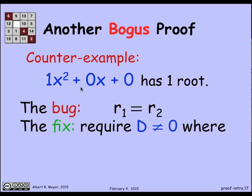The fix to that is to require the quantity by which the two formulas, r1 and r2, differ to be non-zero. And that's the quantity that you were taking the square root of. The discriminant is called b² - 4ac needs to be 0. And then r1 and r2 will differ and we will get the two roots.